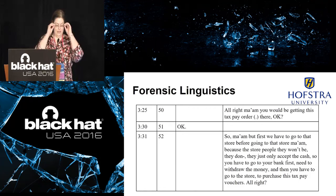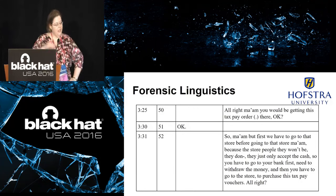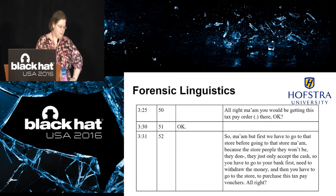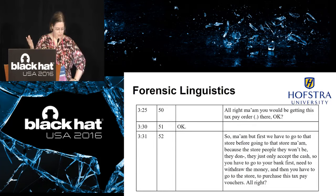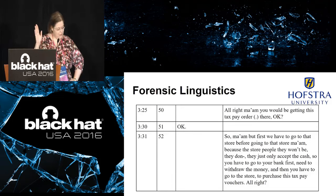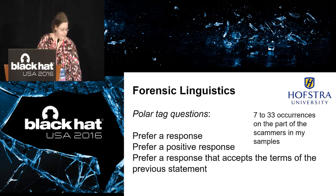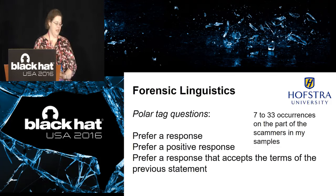Here's what I saw in the data — the scammer on the right, the target on the left. The scammer says: 'All right ma'am, you would be getting this tax pay order there, okay?' She says 'okay.' Then he says: 'Okay ma'am, but first we have to go to that store — the store people only accept cash, so you have to go to your bank first, need to withdraw the money, then go to the store to purchase these tax pay vouchers, all right?' He's always ending on a polar tag question. I found seven to 33 occurrences of polar tag questions in just the phone calls I looked at.